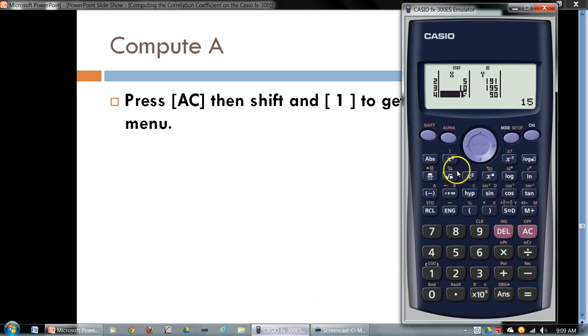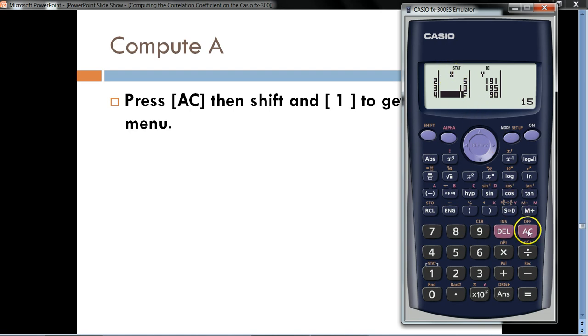Let me show you how to do that. The first thing we want to do is to get out of this editing screen. So, I'll hit AC Clear for that. And then, we have to get to our output screen for regression. To do that, we want to hit the Shift key, and then number 1, where it says Stat right here. So, we'll go ahead and hit that.